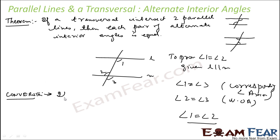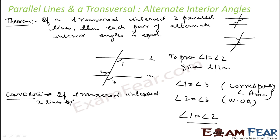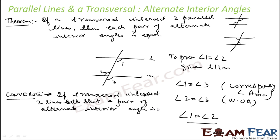Let me write the converse in plain English: if a transversal intersects two lines such that a pair of alternate interior angles is equal, then the two lines are parallel. That is the converse, and we have to prove it.